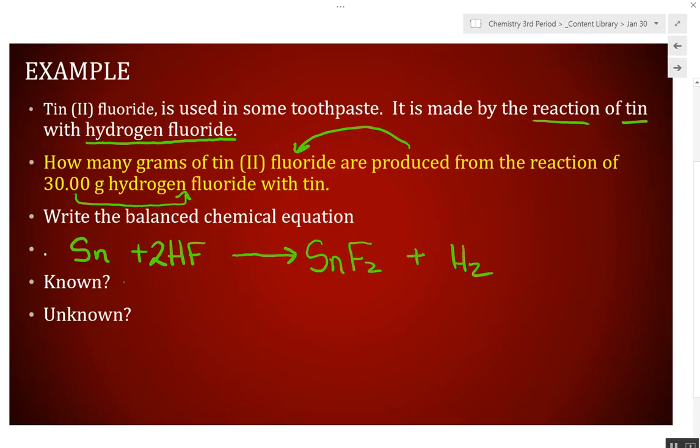Next. What do we know? We know that we started with 30 grams of HF. What we're looking for is grams of SnF2. We need a few things. We need the molar mass of hydrogen fluoride. That's pretty straightforward. F weighs 19, H is 1. So, it would be 20 grams per mole of HF.